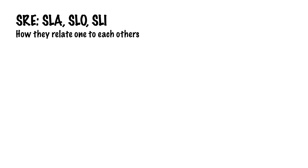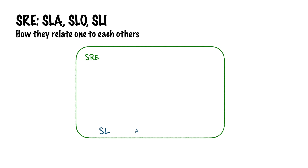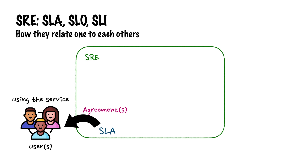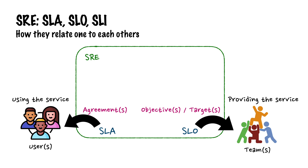Let's have a look at some visualization to understand more about the relationships. SLAs are the agreements made by the service provider for the users of the service. SLOs are the objectives or targets made by the service providers, normally for the teams providing the service. So SLA is normally external, while SLO is normally internal unless it is also open to outside for some reasons. Hence, SLO is typically more stringent than SLA so that the team can deliver on the SLA by achieving the SLO.